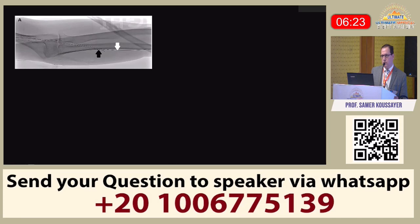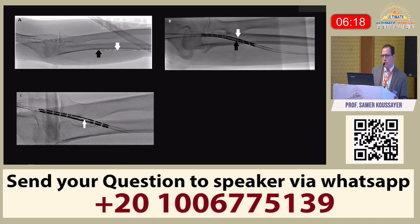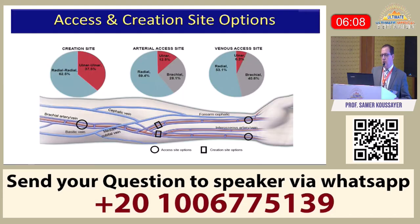For the procedure, wires are advanced through the radial artery and vein. Then the two catheters are placed with the extra load, the magnet holds them together, you fire, and you get the anastomosis. The final result shows augmentation of flow to the superficial venous system. The most common access site is through the radial artery and radial vein.